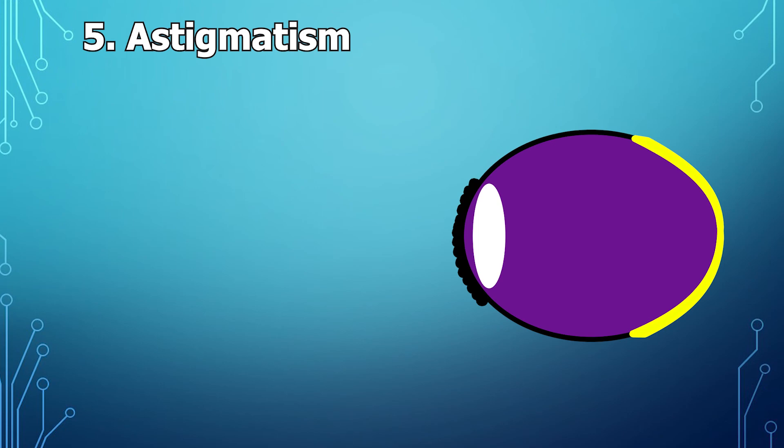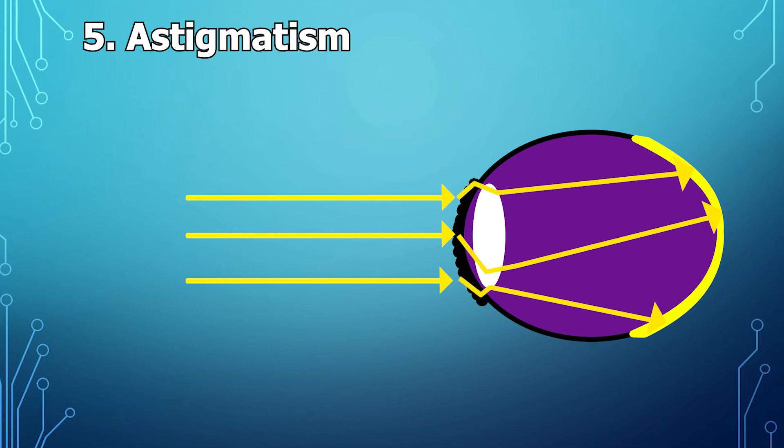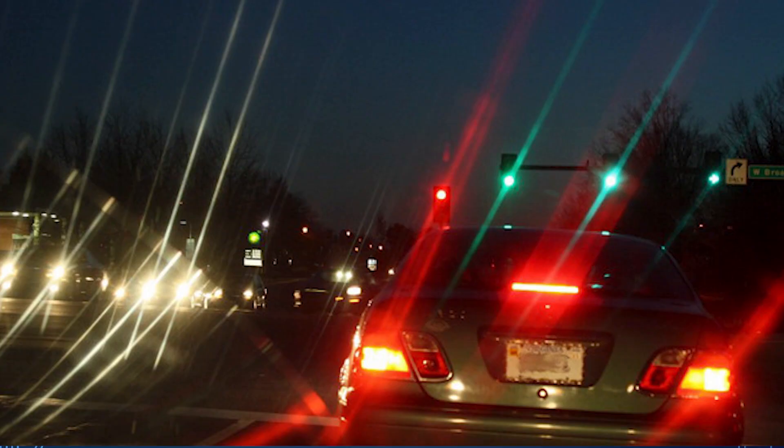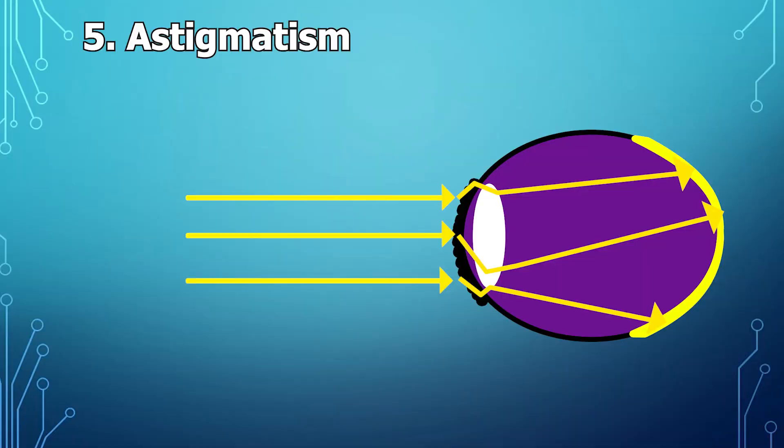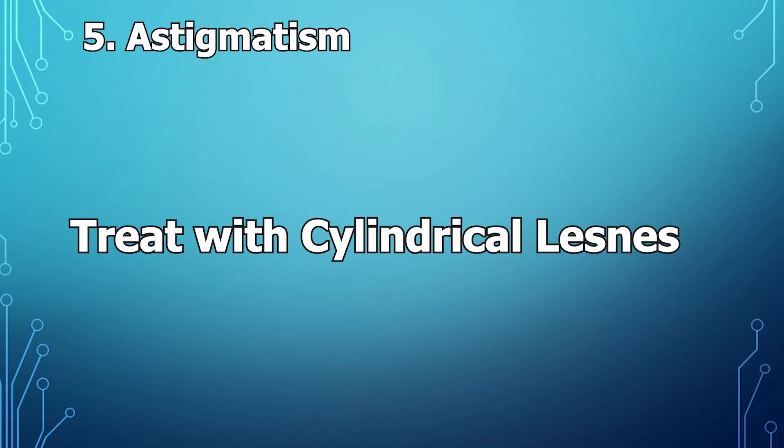But with astigmatism, the cornea is irregularly shaped and when light comes through it, it doesn't bend the light quite right, especially at night. So you get some light hitting the retina in a lot of different places and you get this weird visual distortion that looks kind of like this or like this or like this. And again we can fix it with some glasses, but they have to be cylindrical lenses which are out of the scope of this video.